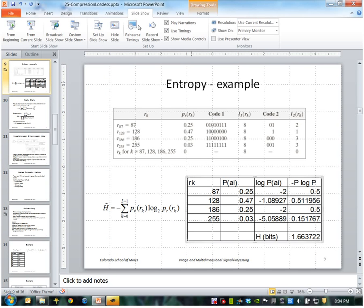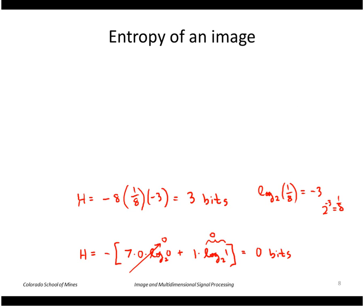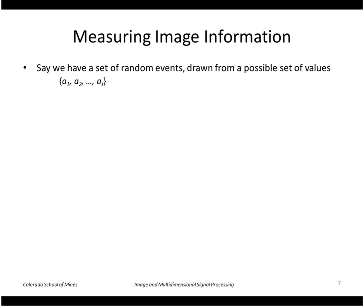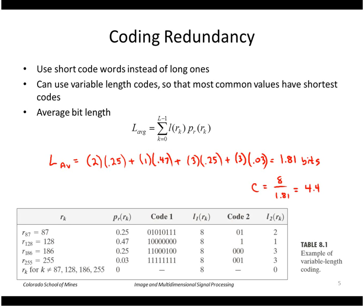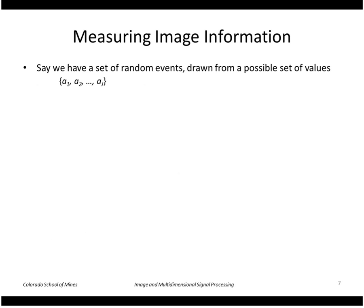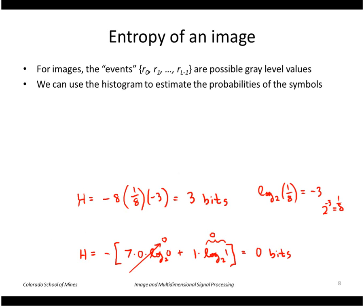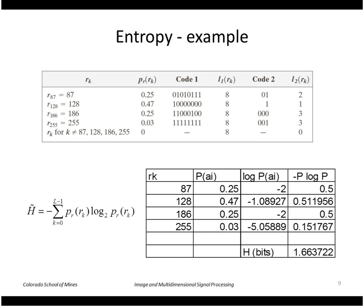So the theoretical minimum here is 1.66 and if we looked at what we had earlier from that example we had 1.81 bits. So using this particular code we generated we had 1.81 bits per pixel but the theoretical minimum is 1.66.